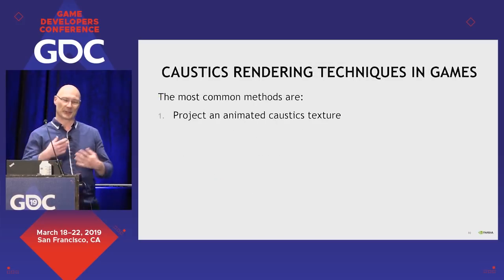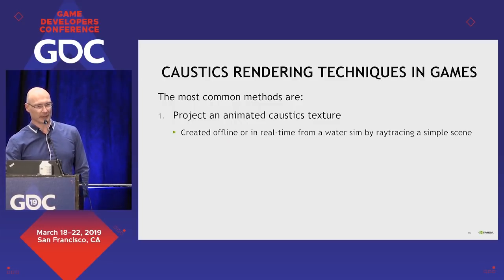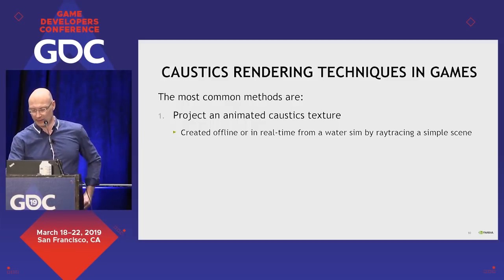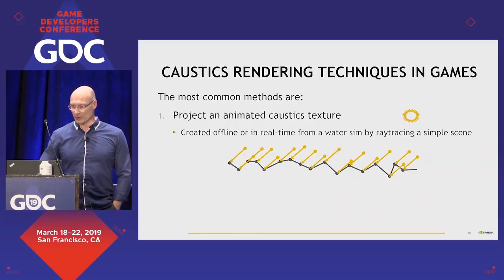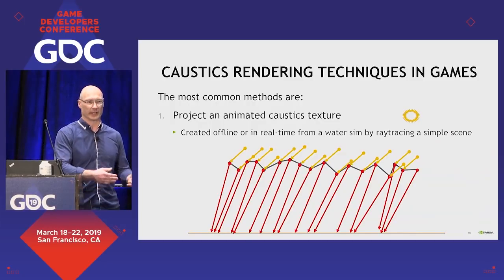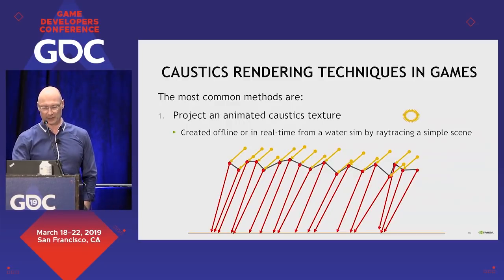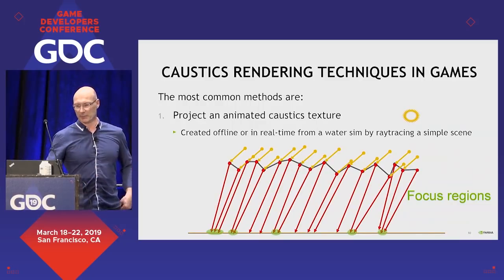The most common method — and also the oldest — is just to project an animated caustics texture. In the very old days, this was created offline, perhaps by artists as a looping caustics texture animation. But today it's probably created in real-time from a water simulation by ray tracing a very simple scene. You have a water surface, light rays come in, and you ray-trace a simplified scene that is just a flat plane — it's easy to compute ray intersections with a plane. You can see where light rays concentrate, which is where the bright spots in the caustics patterns appear.